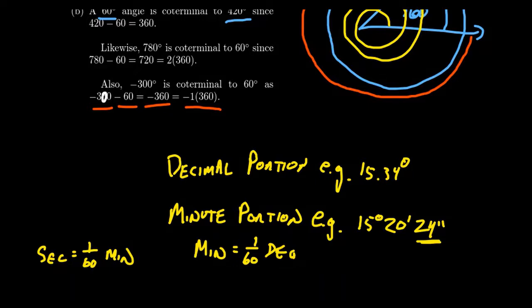This is similar to a ruler or measuring tape: if you have an inch, it might be subdivided into a half inch, then a quarter inch, then an eighth of an inch, a sixteenth of an inch, and so on — up to a thirty-second of an inch. You don't typically see measuring tapes with more than thirty-seconds of an inch. There's not many measurements that require getting smaller than one thirty-second of an inch. The same thing applies with degree measure.